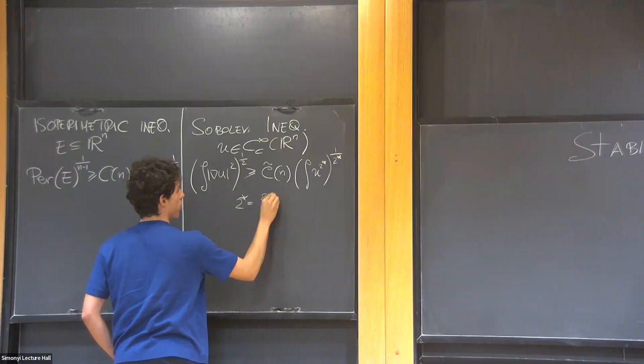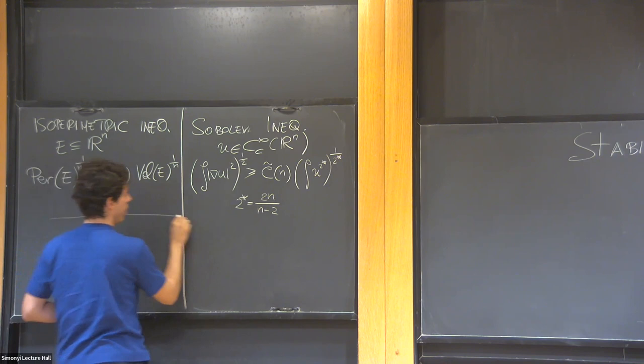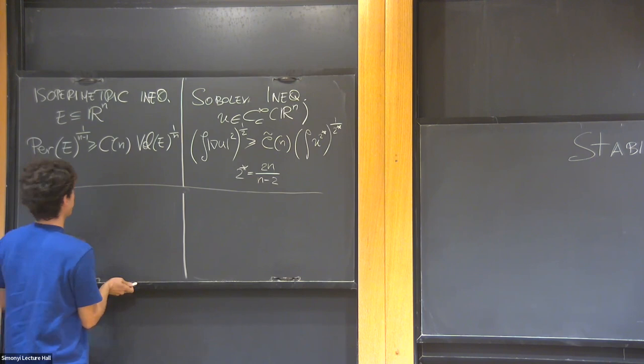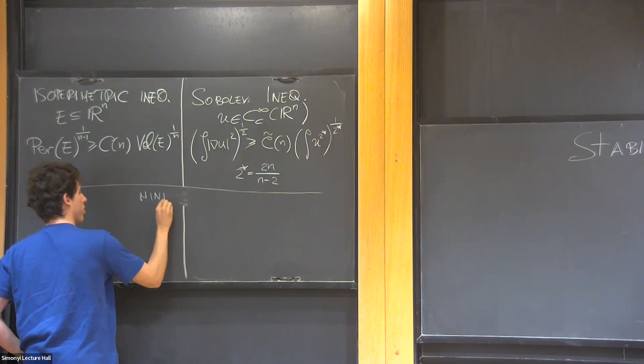And two star is the only exponent which makes sense because of homogeneities. Okay, these are very well studied. So for example, we know the optimal constant Cn, we know the optimal sets and the optimal functions. So what are the optimal sets and optimal functions, which are called minimizers?